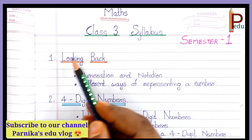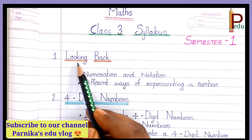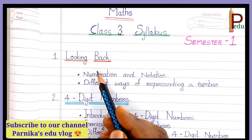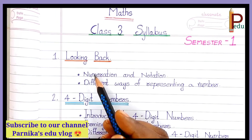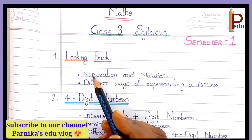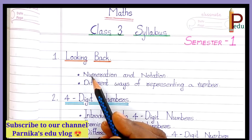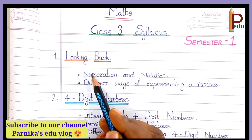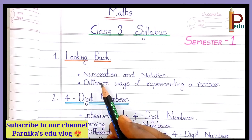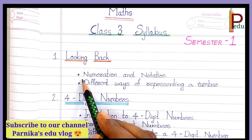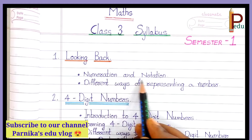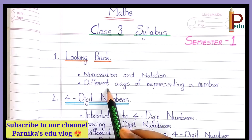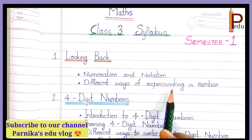The first chapter is Looking Back. Looking Back is nothing but revising previous basic concepts — all the basic concepts covered in the previous class will be revised in this chapter. The first topic is Numeration and Notation. Second one is Different Ways of Representing a Number.